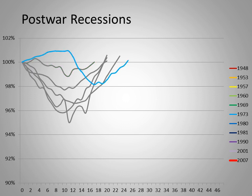The recession which began in 1973 was longer, although the employment impact was delayed. The 1980 downturn was short-lived, but only because it was superseded by the double-dip recession, which began in the summer of 1981 and dragged on for two more years.